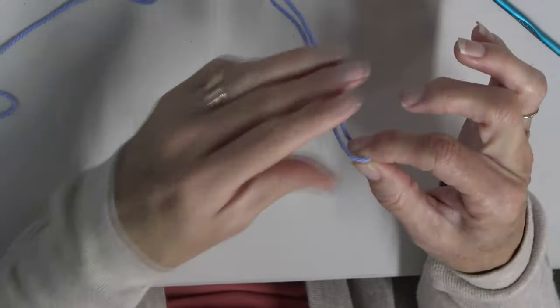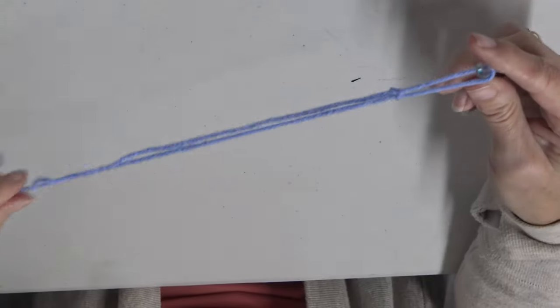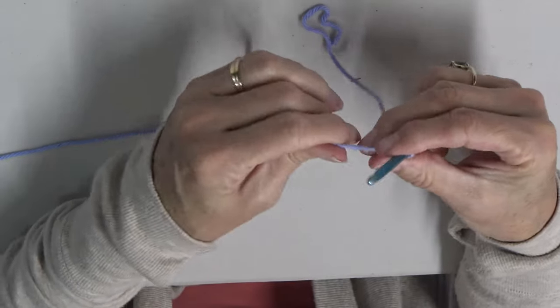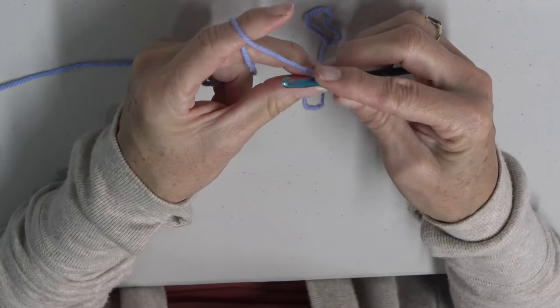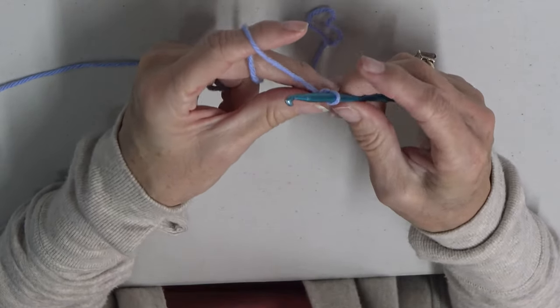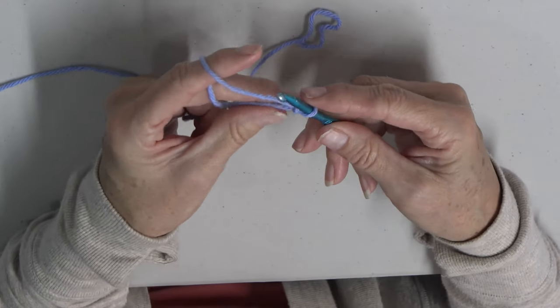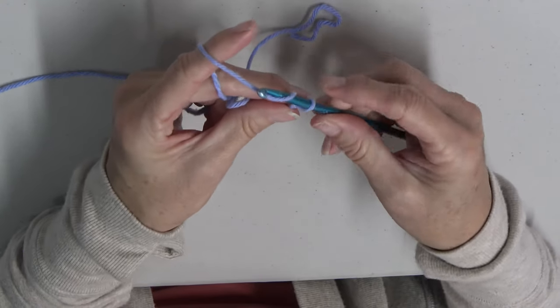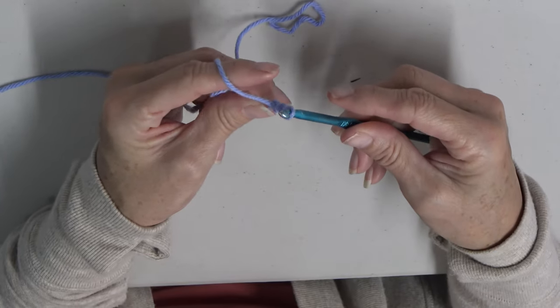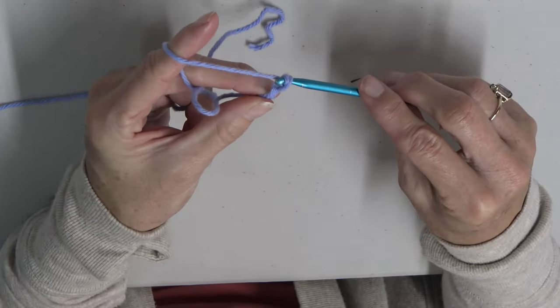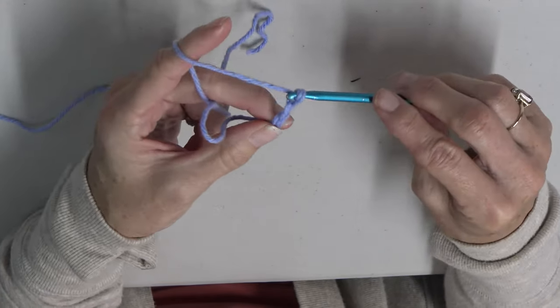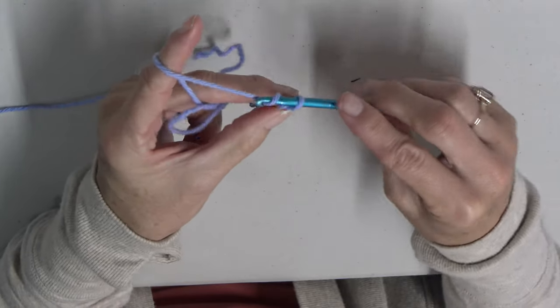And so on this one we are going to chain 40 chains across. And on a chain you simply wrap it over your hook and draw it through the loop that is on the hook. So wrap it over, draw it through. There's one. Wrap it over, draw it through. Wrap it over, draw it through. So you do that for 40 chains across.